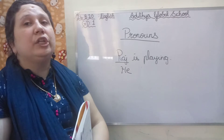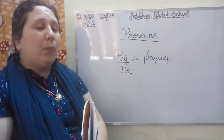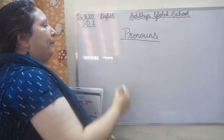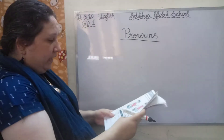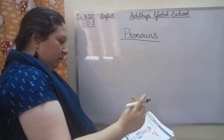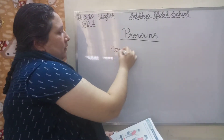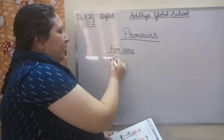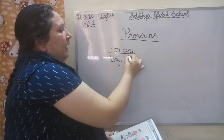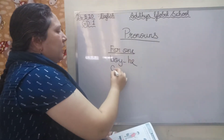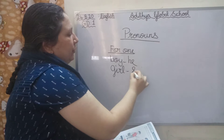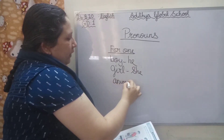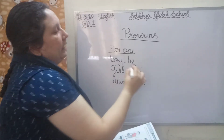Like he, she, it, they, we. So now for a single thing — for a boy we use he. For a girl we use she. And for animals and things we use it.